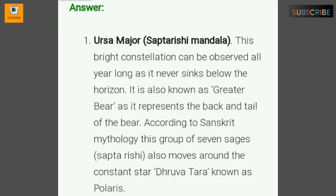Number one: Ursa Major — Saptarishi Mandala. This bright constellation can be observed all year long as it never sinks below the horizon. It is also known as the Greater Bear, as it represents the back and tail of the bear. According to Sanskrit mythology, this group of seven sages (Saptarishi) also moves around the constant star Dhruvatara, known as Polaris.